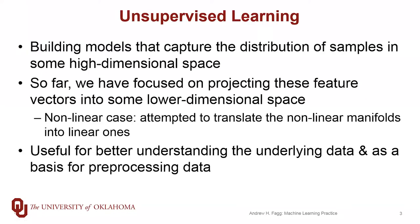We've been talking about unsupervised learning methods, which are really about constructing models that allow us to understand the distribution of samples that exist in some high-dimensional space. So far, the techniques have been more about projecting these feature vectors into lower-dimensional spaces — in some cases with linear projections, in other cases with non-linear steps. For a couple of the algorithms, we've been focused on techniques that allow us to take non-linear manifolds, curves, and surfaces in space, and unwarp them into lower-dimensional but linear manifolds. These approaches help us better understand the nature of the data, and we can also use them to pre-process data so that subsequent supervised learning methods are more successful.